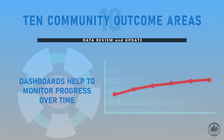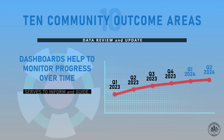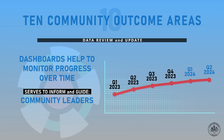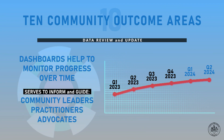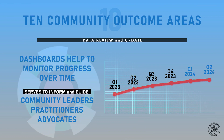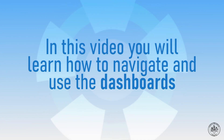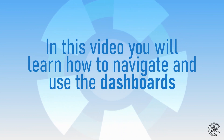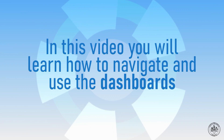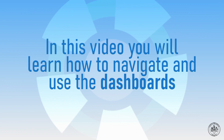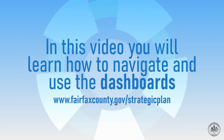The dashboards help to monitor progress over time and serve to inform and guide community leaders, practitioners, and advocates in making data-driven decisions, planning-related strategies and programs, and prioritizing resources. In this video, you will learn how to navigate and use the dashboards. Let's start by exploring the County Strategic Plan and Community Outcome Areas, which can be viewed by going to the website at www.fairfaxcounty.gov/strategicplan.